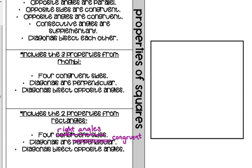Let's mark a square with all the properties we know. It has two pairs of parallel sides — the top is parallel to the bottom, the left side is parallel to the right side. All four sides are congruent, which comes from being a rhombus. Opposite sides are parallel and opposite sides are congruent. Let's put in our right angles — that comes from rectangles, and that also satisfies that opposite angles are congruent and consecutive angles are supplementary.